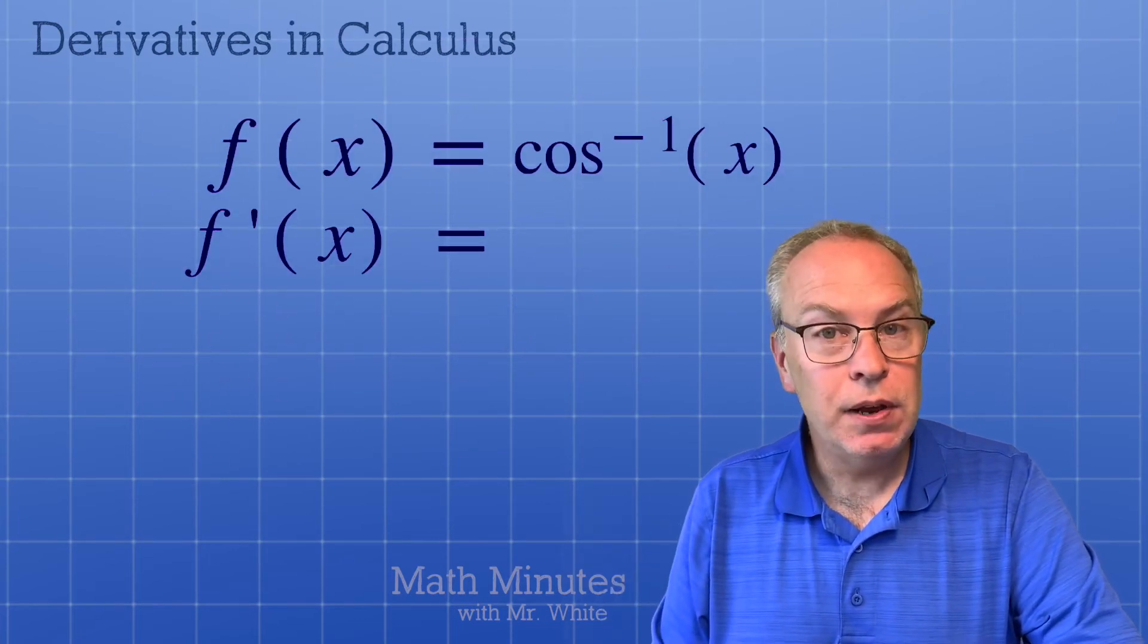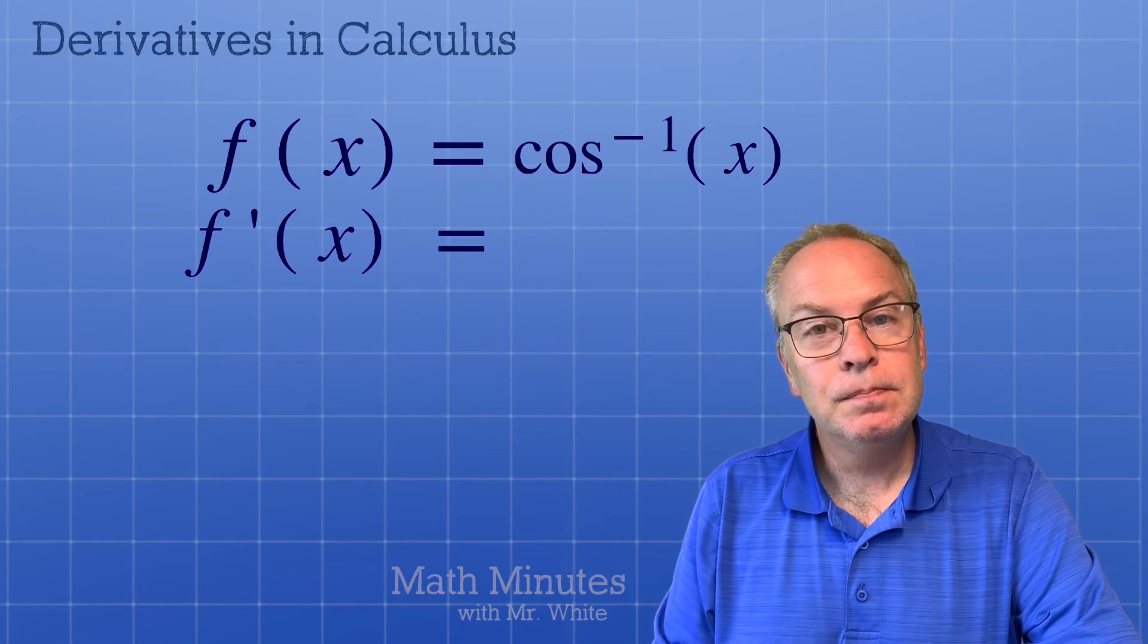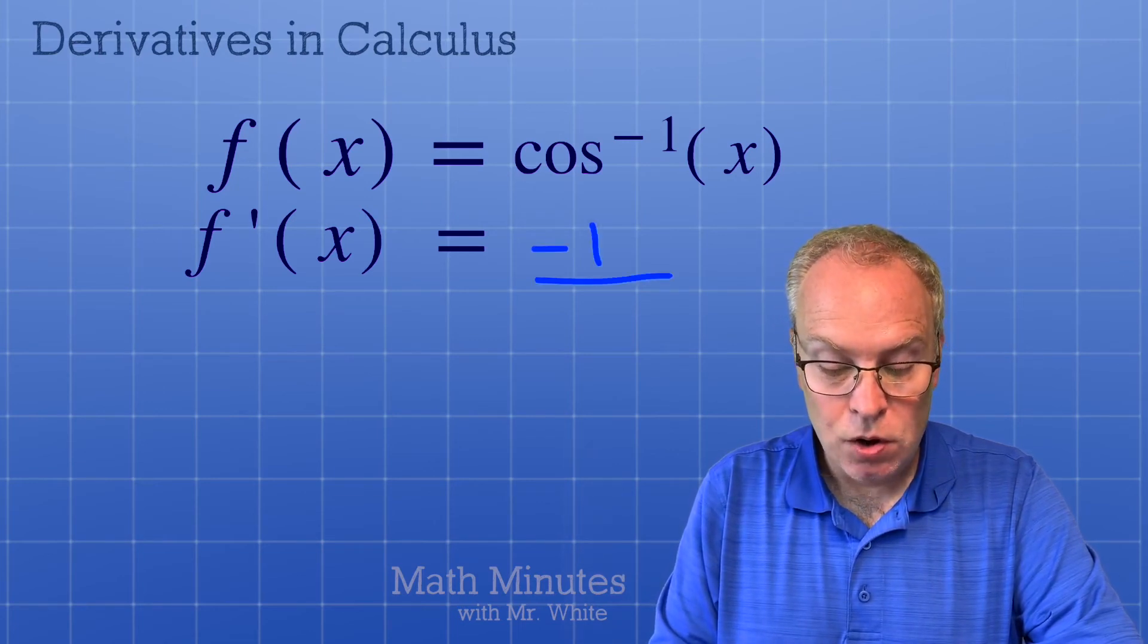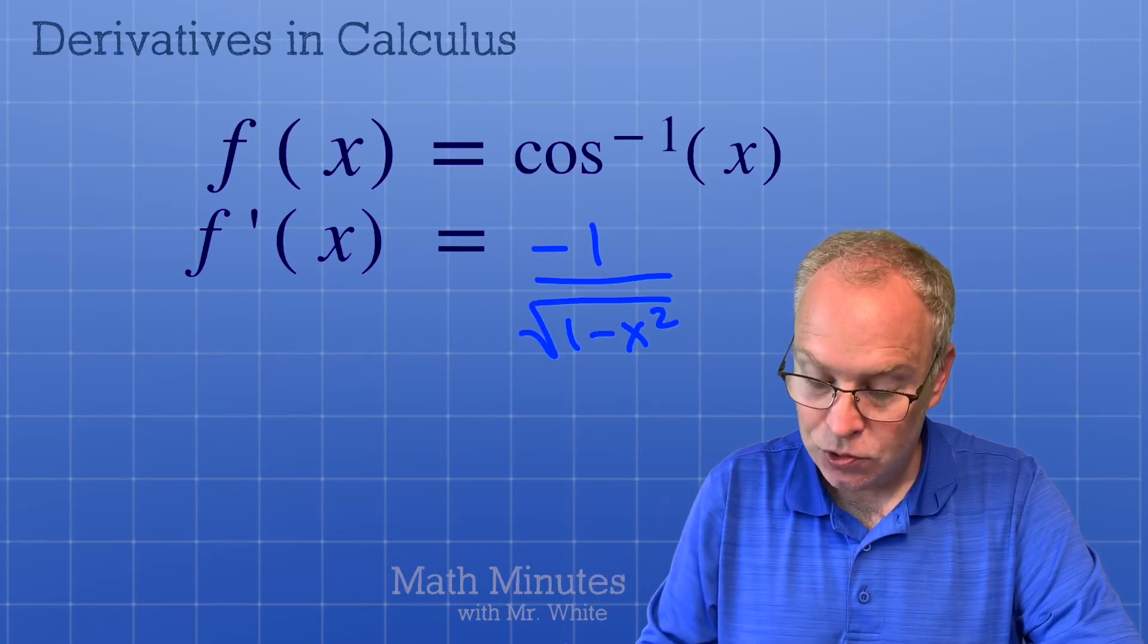What is the derivative of inverse cosine? Negative 1 over the square root of 1 minus x squared. Very similar to the last one.